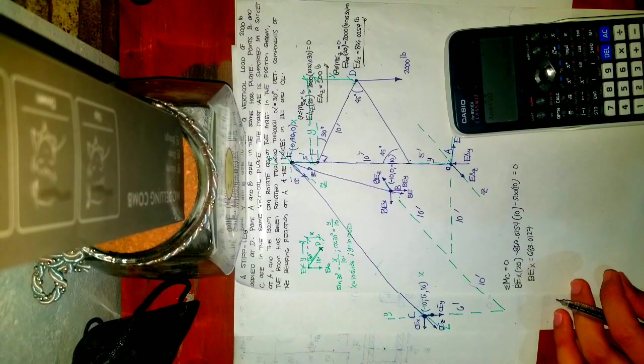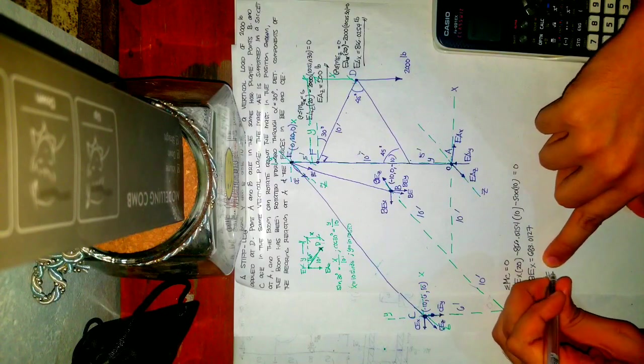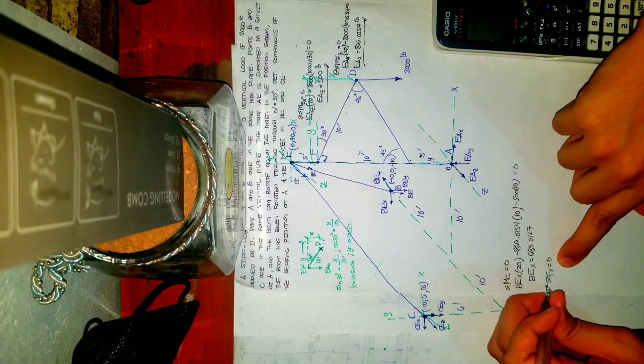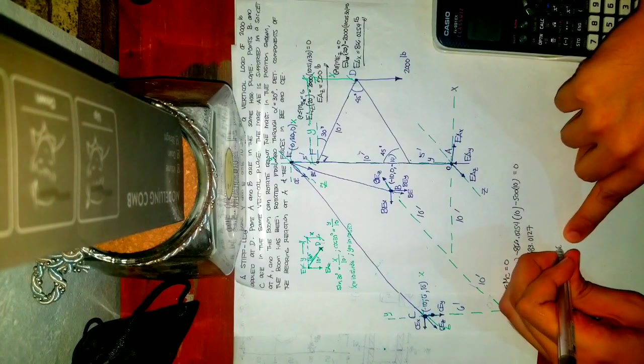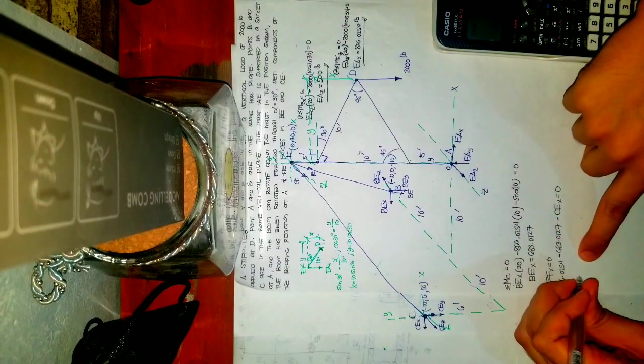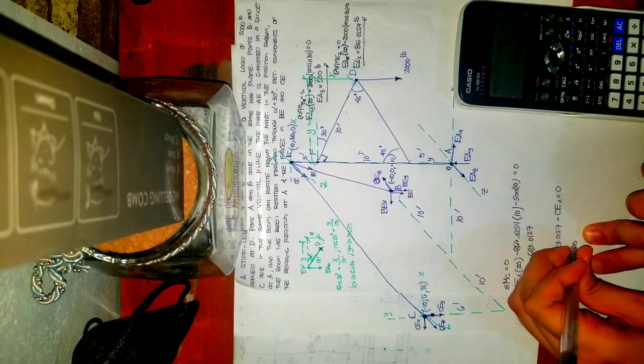To find CEX, we use the remaining equilibrium equation — summation of forces in X equals zero. Taking rightward as positive: EAX − BEX − CEX = 0, so 866.0254 − 683.0127 − CEX = 0. Therefore CEX = 183.0127 pounds.